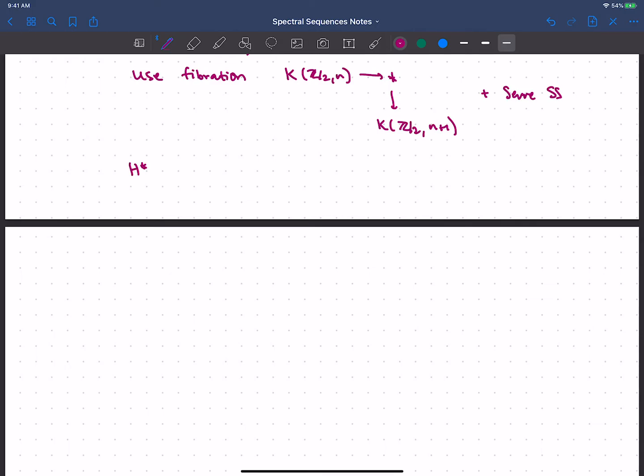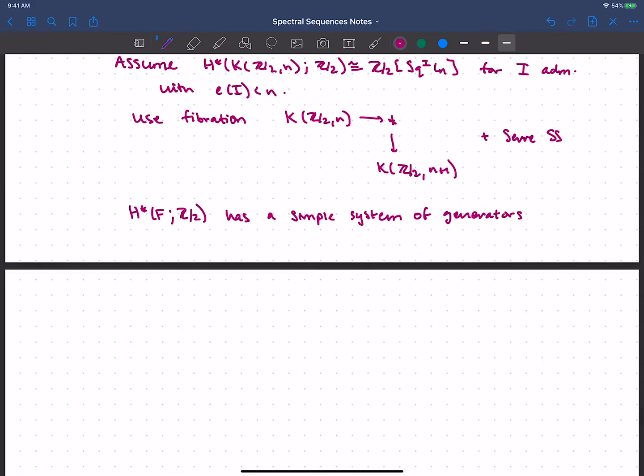And what do we want to do? Well, our best technique for this induction is going to be to use our loop path fibration. So we'll use that we know the cohomology of K(Z mod 2n). The paths are contractible over the base. I'm struggling to write K(Z mod 2n+1). And we'll use the Serre spectral sequence as usual.